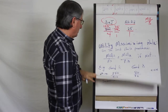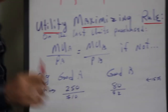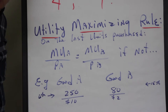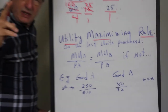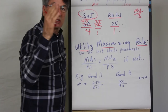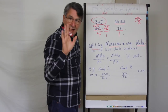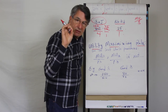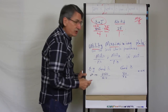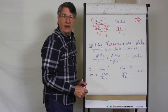This is an example of utility maximizing. There's a utility maximizing rule that says when you have a certain amount of income and you have choices about how to spend your money — in the simplest world possible, a two-good world where there are only two things you can spend money on — the condition is: the marginal utility of the first good divided by its price must equal the marginal utility of the second good divided by its price.